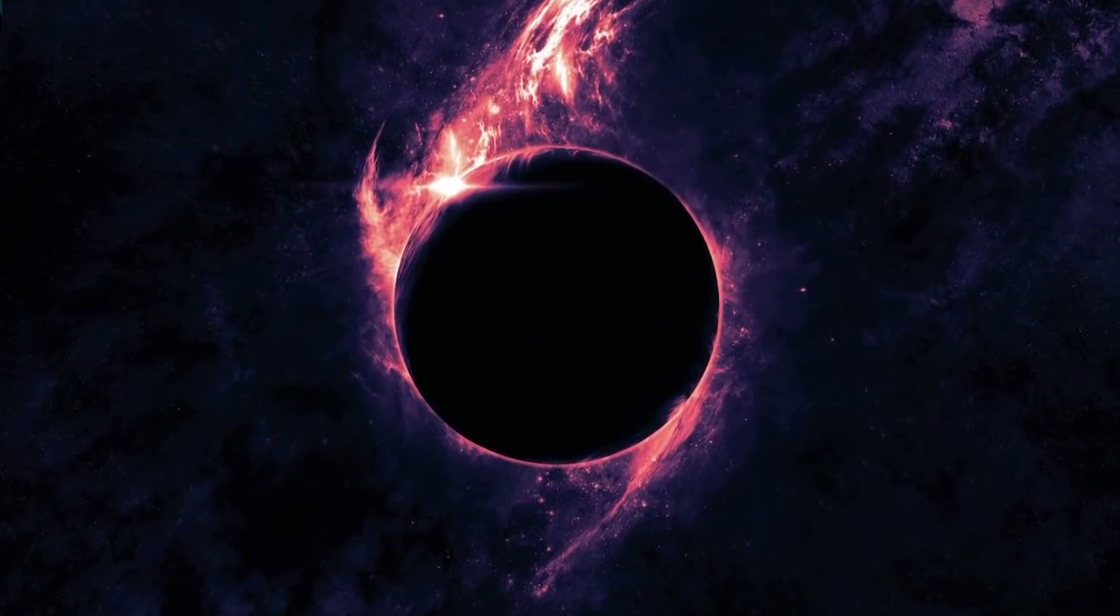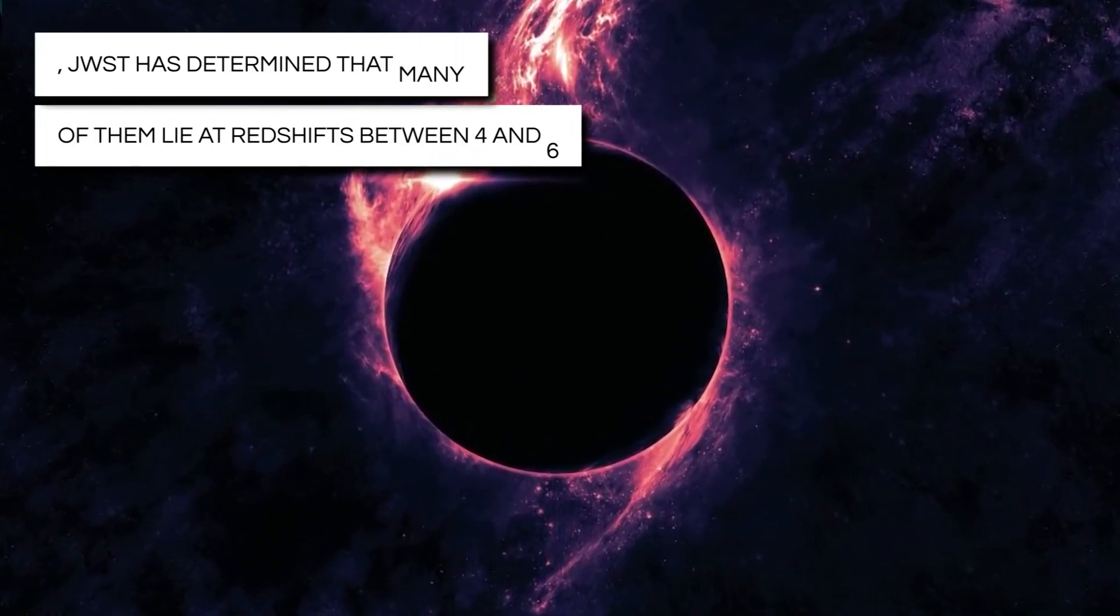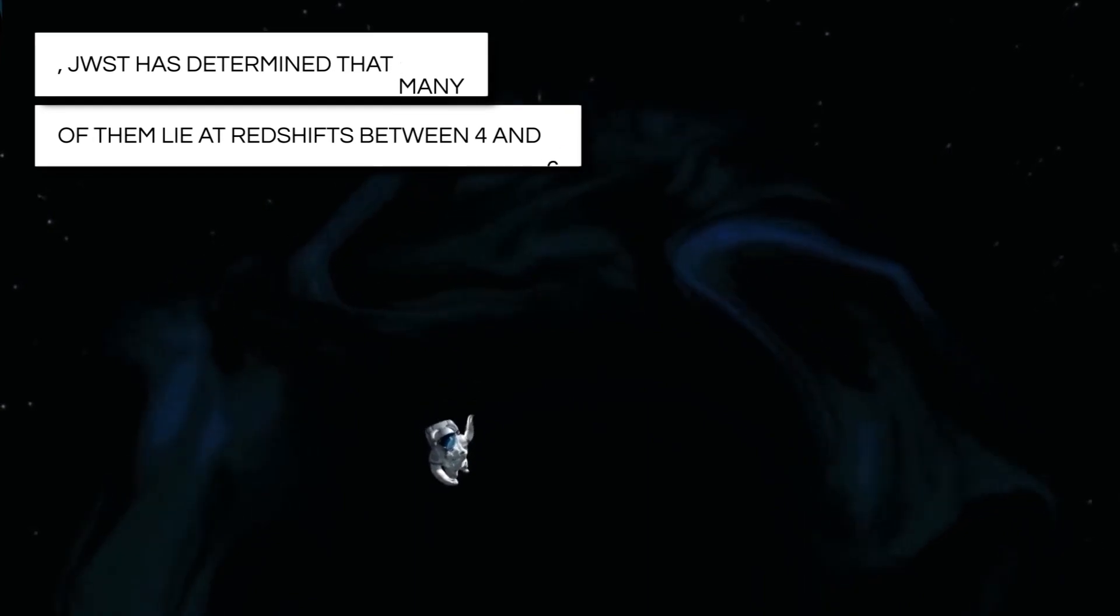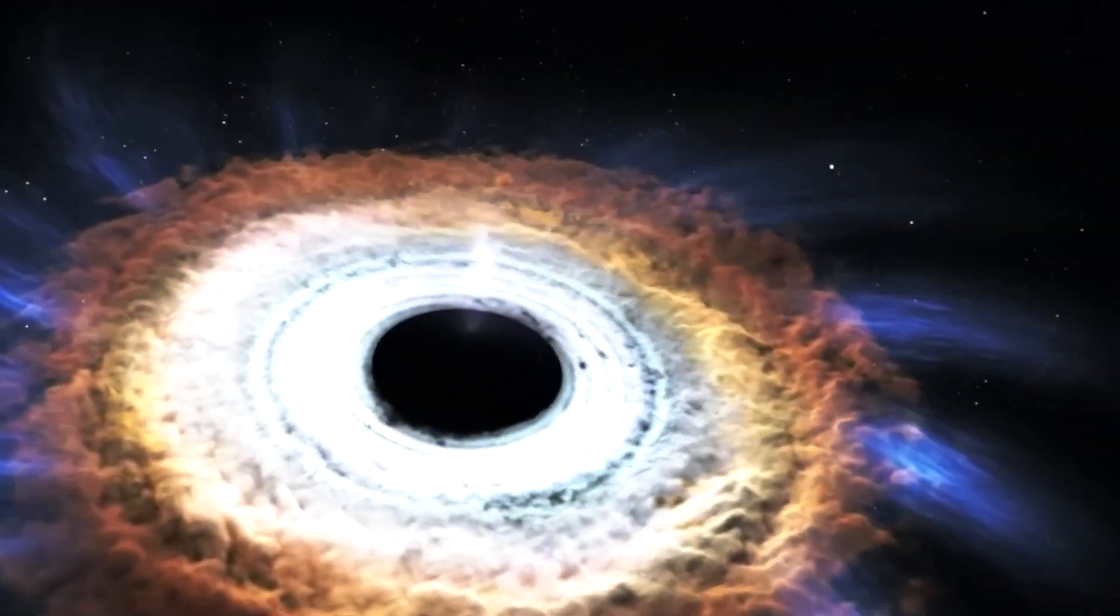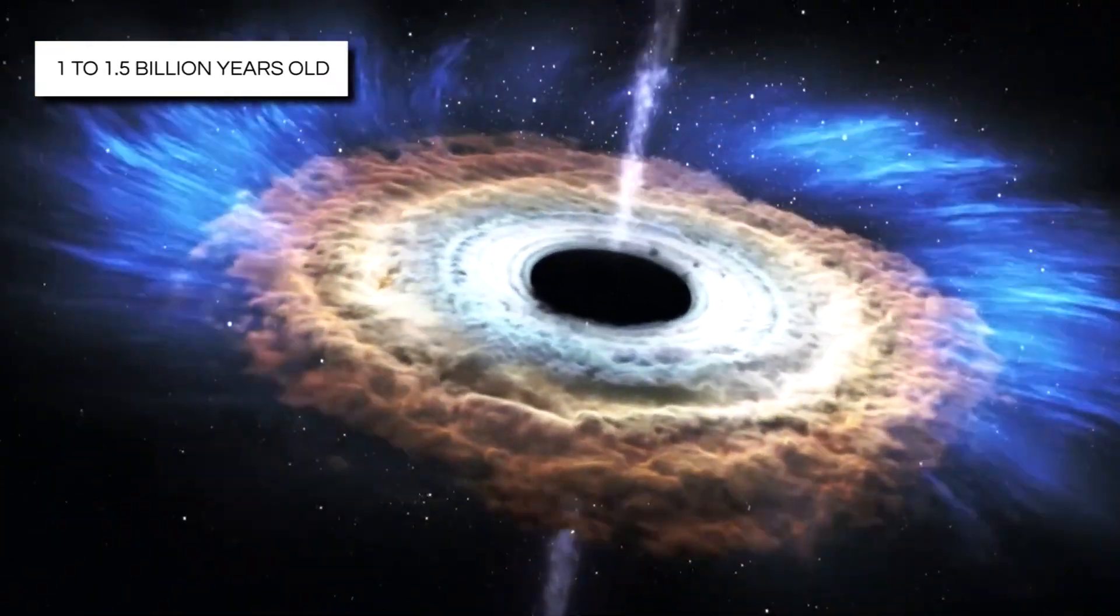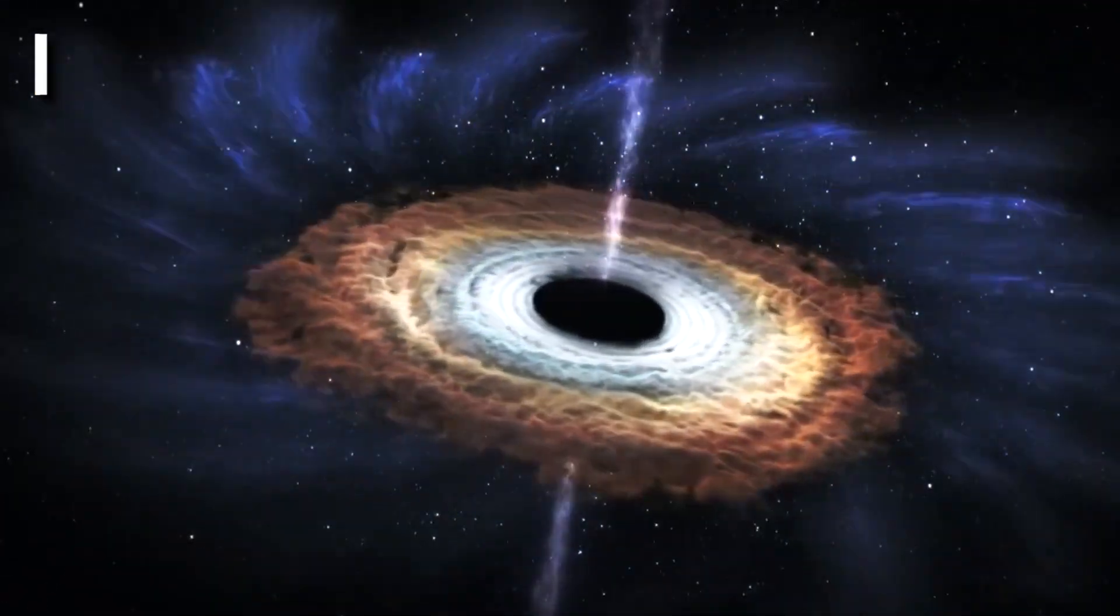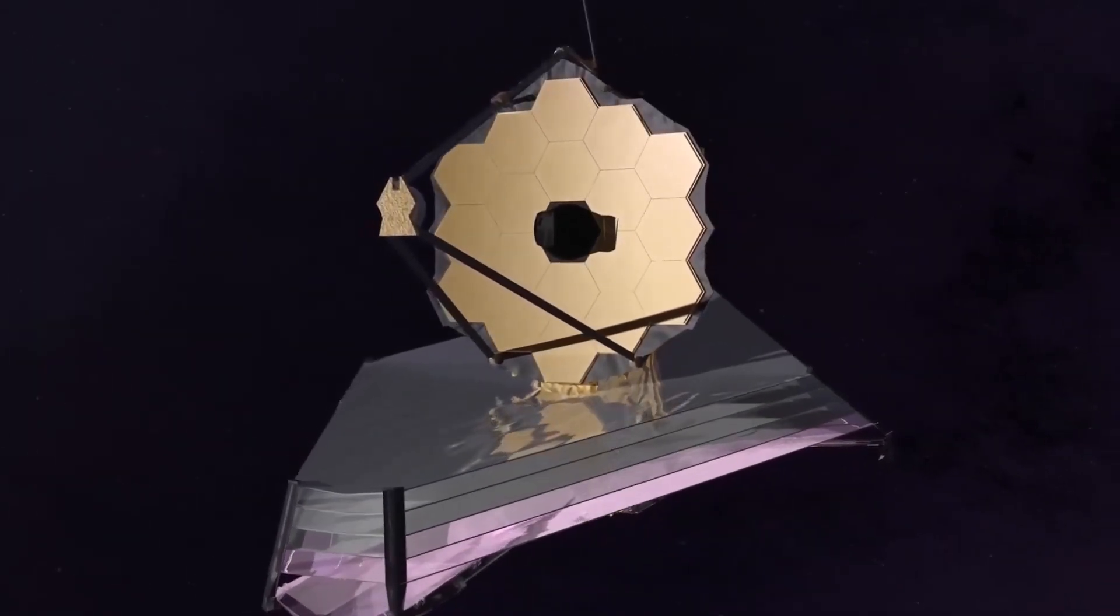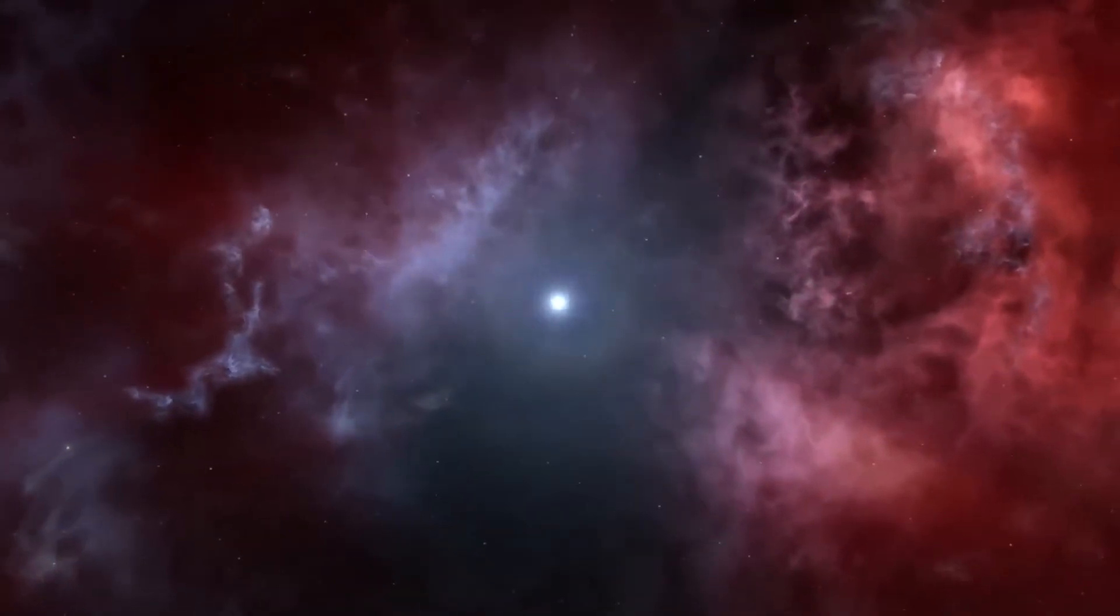By measuring the redshift of these black holes, JWST has determined that many of them lie at redshifts between four and six, corresponding to a time when the universe was approximately 1 to 1.5 billion years old. These faint black holes appear as unassuming blobs in JWST images but are distinct from the surrounding galaxies.